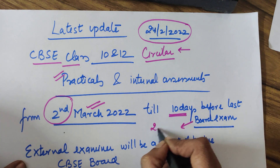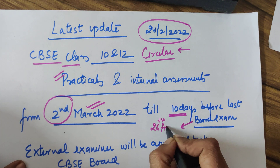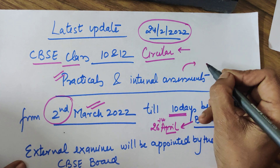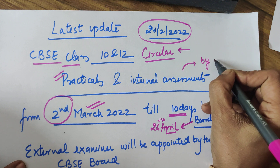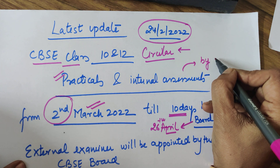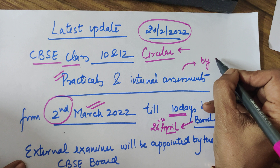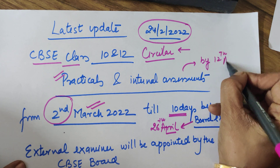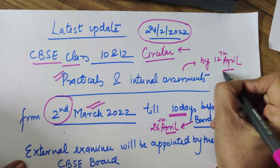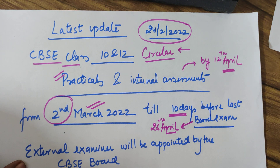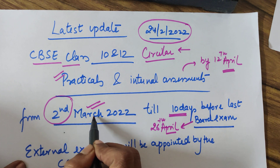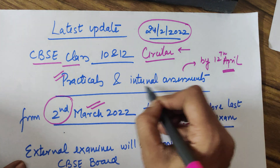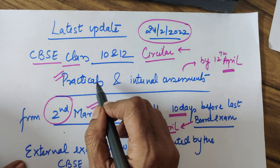Your board exam date sheet is around 26th April, which means all internal and practical assessments would definitely be done around 15 days before that date — making it around 11th or 12th April. No school keeps practicals beyond mid-April, so you should be mentally prepared that between mid-March and mid-April every school will have their internal assessments as well as practicals.